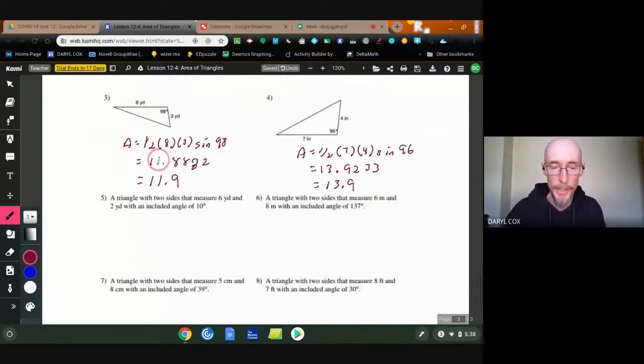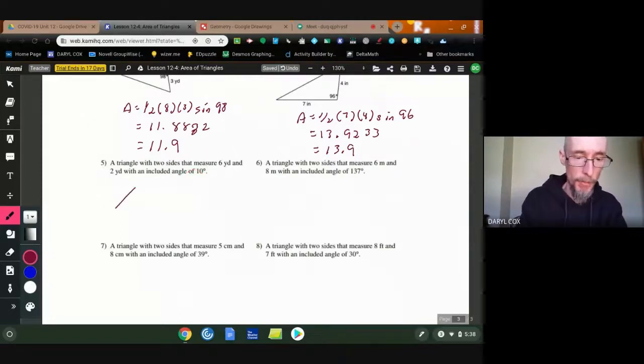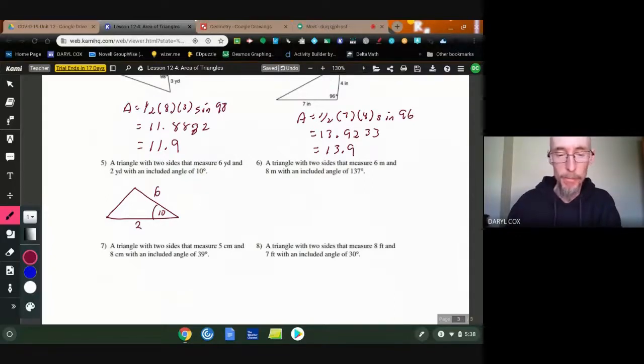I'm not even worried about these last few problems, because they're basically the same thing. Two sides, six and two, with an included angle of 10. Just to help you draw that if you had a problem. So, six and two, included angle. So that's the one in between them. That's it. Same problems. Okay? So your homework is going to be doing some problems with the area triangles. That's it. Have a good night.